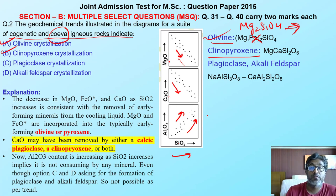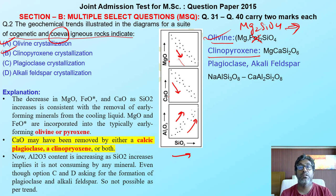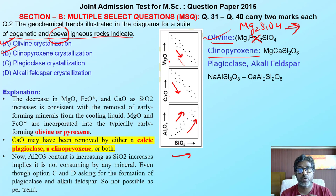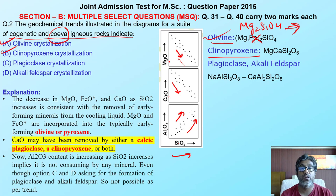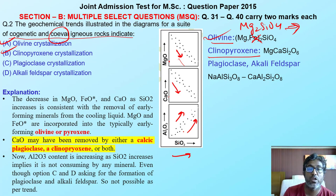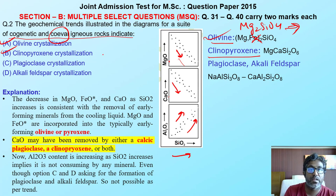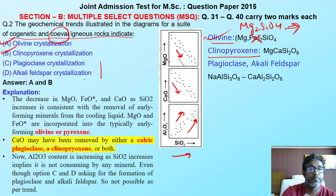The simple principle is: if you are forming a mineral, its constituent elements should decrease in concentration — they should be consumed. Here Al2O3 is not decreasing, so plagioclase cannot be formed. My options should be A and B.